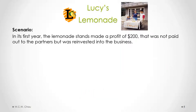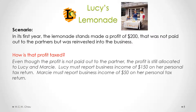Lucy's Lemonade, in its first year, made a profit of $200. That profit was not paid out to the partners, but was reinvested into the business. Even though the profit is not paid out, it is still allocated to Lucy and Marcy. Lucy must report business income of $150 on her personal income tax return, and Marcy must report $50 of business income on her personal tax return — because the partners and the partnership are considered one and the same for tax purposes.